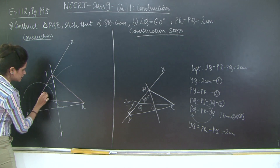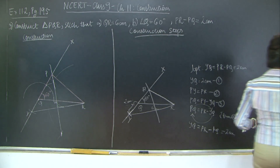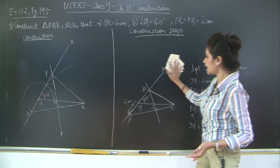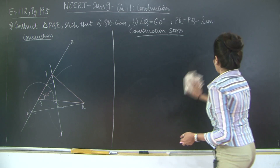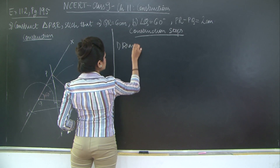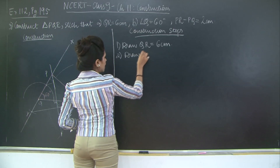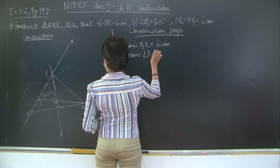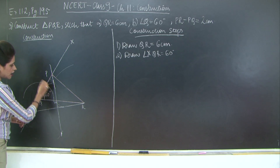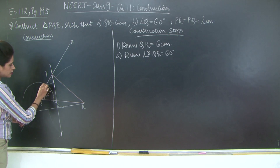So we have P to Q, then Q to R, and finally P to R. This angle is 60 degrees — that is angle Q. Now let's go ahead and write the construction steps. Step 1: Draw QR equal to 6 centimeters. Step 2: Draw angle XQR equal to 60 degrees. How is this 60 degrees? By taking an arc at Q with center M and cutting an arc — intersecting at point O.